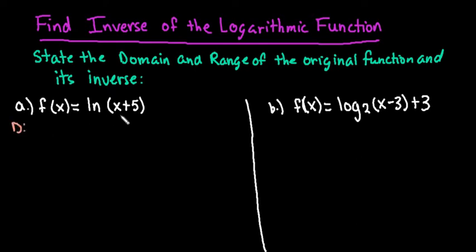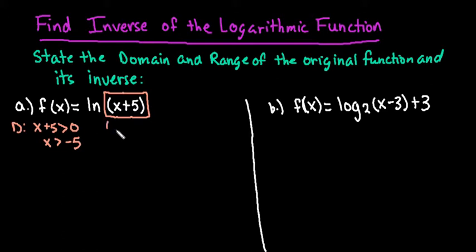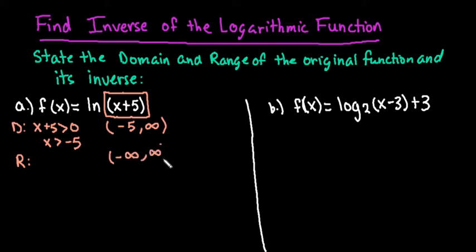The domain of this function — remember that the argument of the logarithm has to be greater than 0, so x plus 5 has to be greater than 0. Solving this, x has to be greater than negative 5. So our domain in interval notation would be from negative 5 to infinity. The range for logarithms is negative infinity to positive infinity. You would have a vertical asymptote at negative 5.